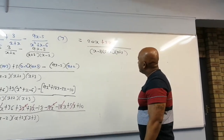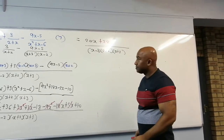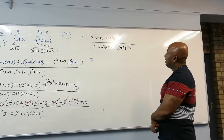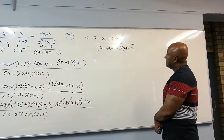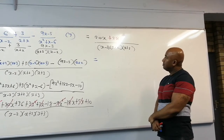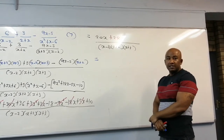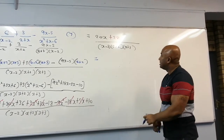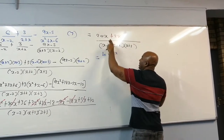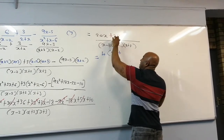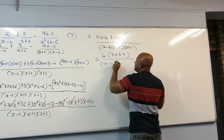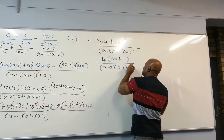Now we try to factorize the numerator. What is the highest common factor? It's 4. So 4 times 5 is 20, and 4 times 7 is 28. So that gives us 4 times the quantity 5x plus 7, all divided by x minus 3, x plus 2, x plus 3. It doesn't seem to be simplifying very nicely — unless a mistake was made somewhere.